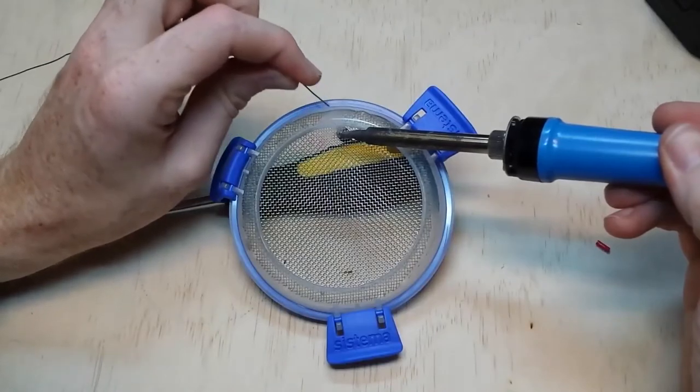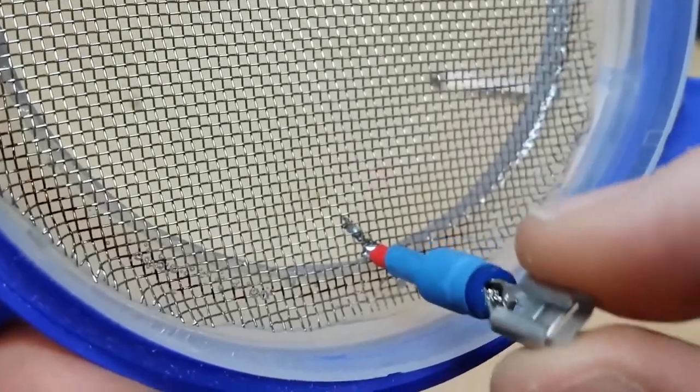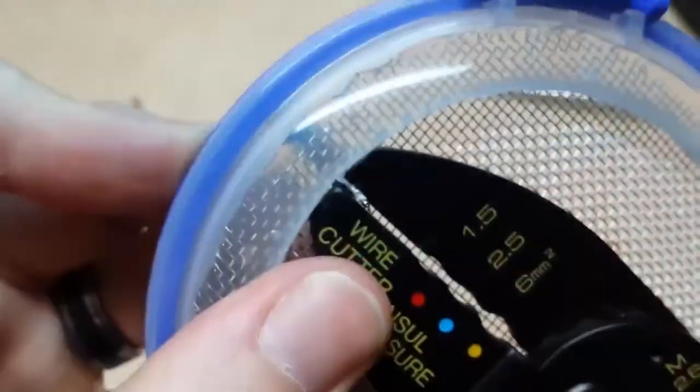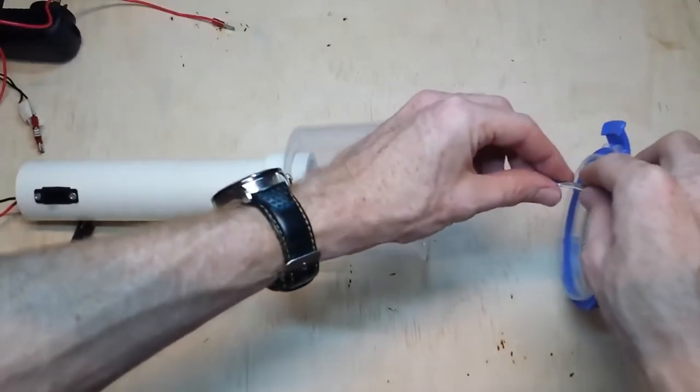Finally, I trim off the excess, connect the two plugs and clip the lid onto the container. And that's the finished static grass applicator ready for use.